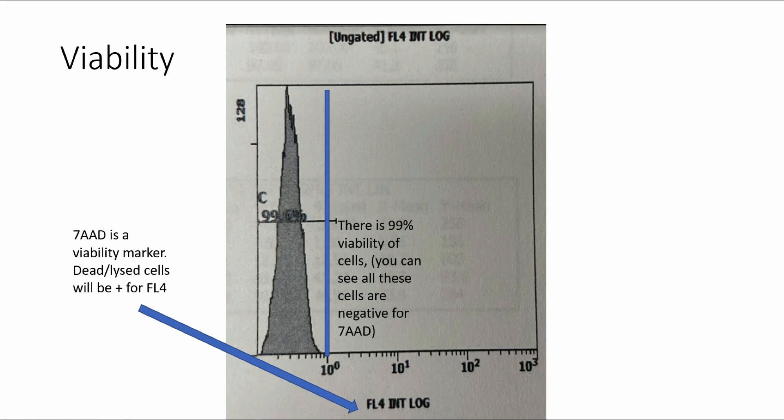How do we determine if the cells where we take the flow from, for instance, like the blood or the bone marrow, are viable? We can use a marker called 7-AAD, and it will be negative in intact, alive cells, but positive in dead or lysed cells. So in this case example, we have 99% viability because it's negative for 7-AAD.